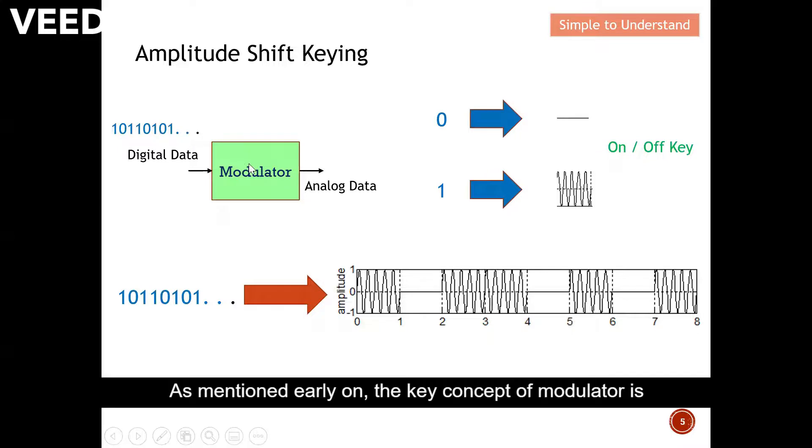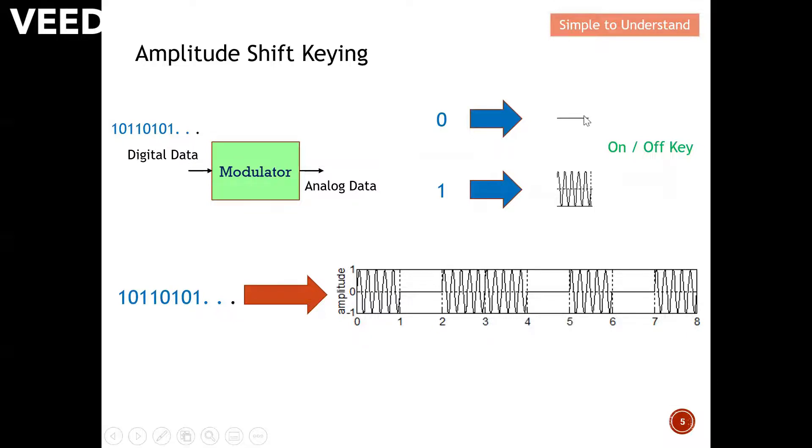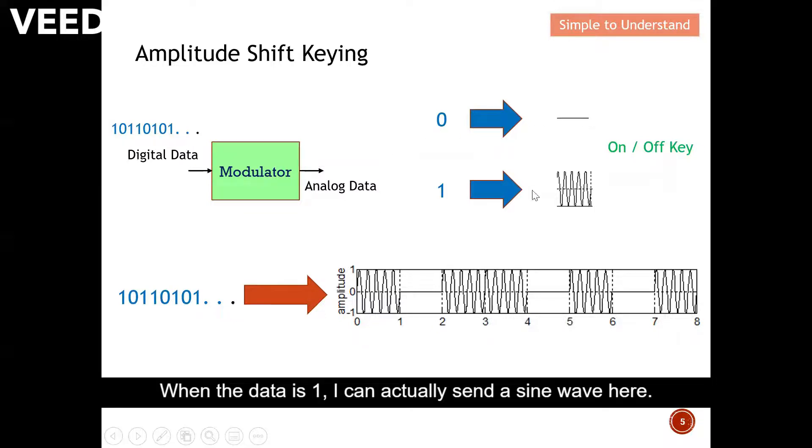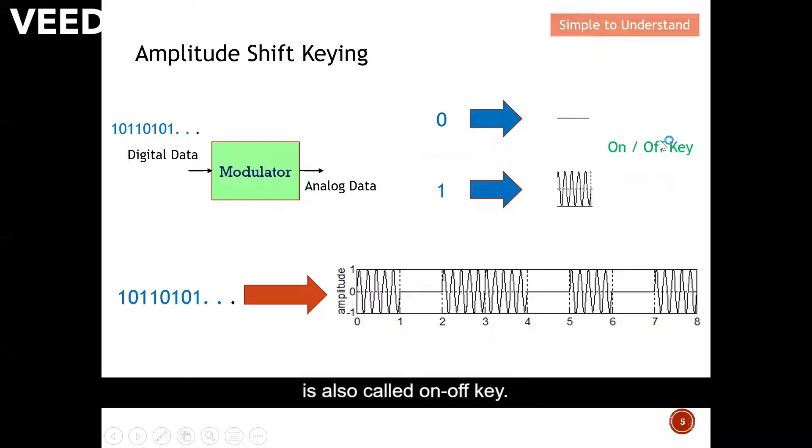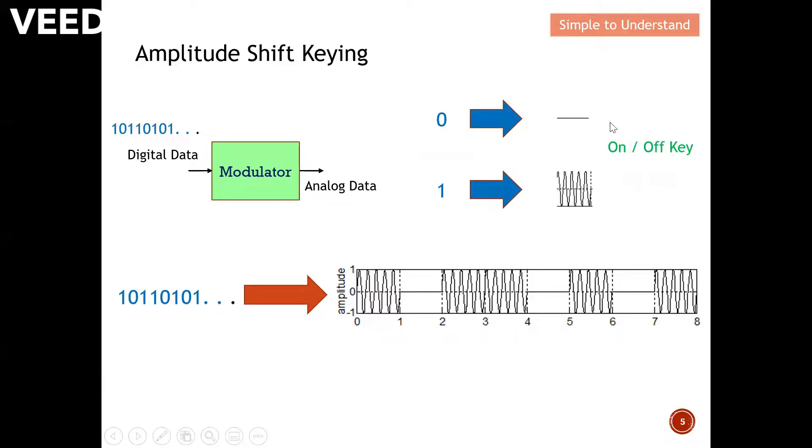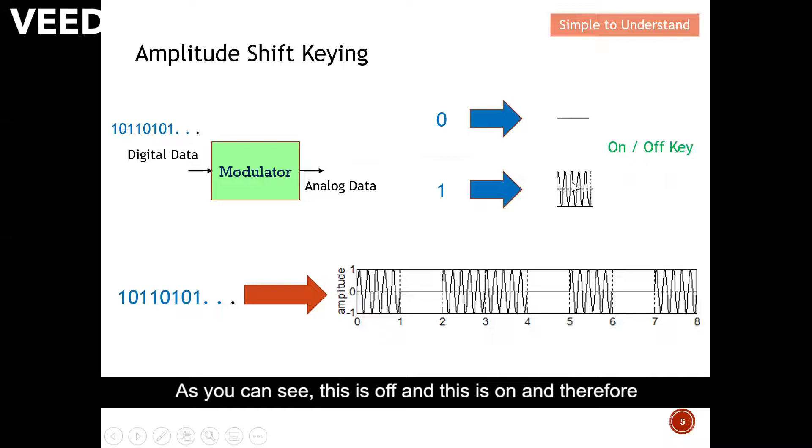So as mentioned earlier on, the key concept of modulator is to convert the digital data into analog data. So over here, for example, when the digital data is zero, I can represent by one straight line. No transmission. When the data is one, I can actually send a sine wave here. So there is another name for amplitude shift keying. It's also called an on-off key. Whereas you can see this is off, and this is on, and therefore it is also called an on-off key.